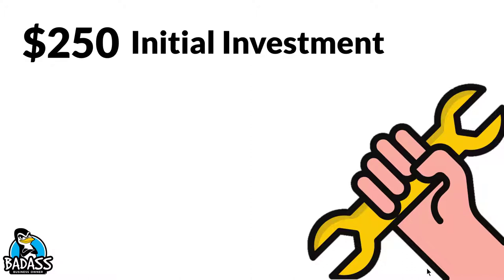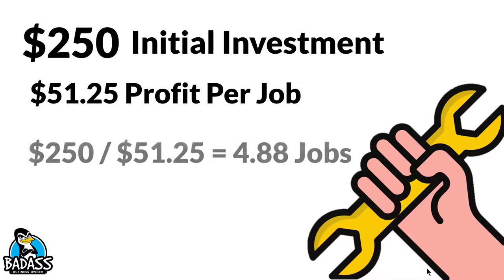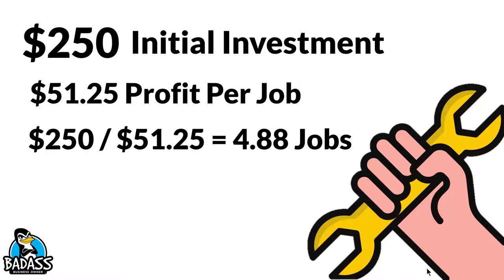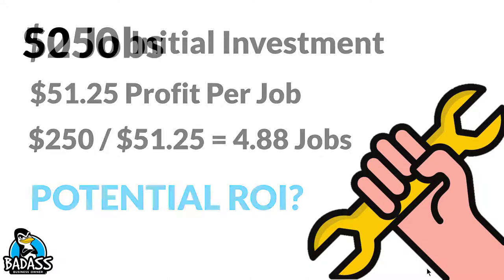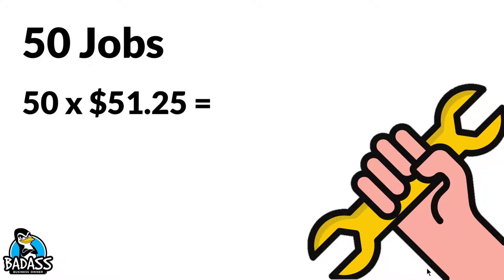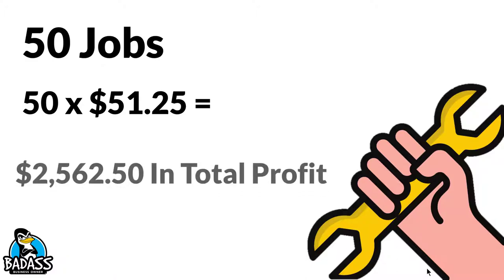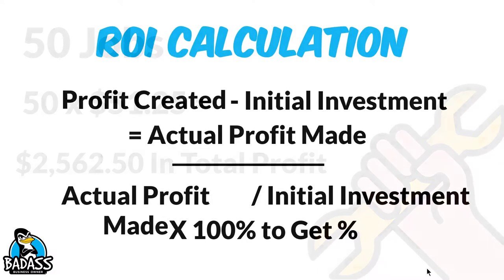Now back to our ROI calculation. We want to know how long it will take to recoup the initial investment and at least break even. If the cost of the equipment is $250 and our profit on one service is $51.25, then dividing $250 by $51.25, we need a minimum of five jobs to at least get our money back. Let's say the item lasts for at least 50 jobs. Those 50 jobs at $51.25 in profit could potentially lead to $2,562.50 in profits.